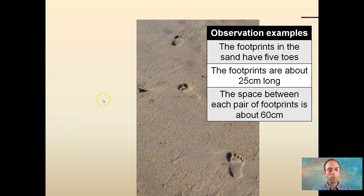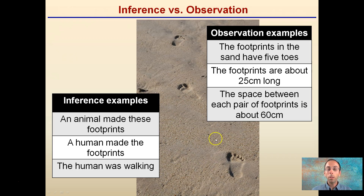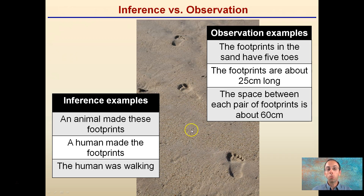Our definitions between observations and inference — we see some footprints here in the sand. An observation would be: the footprints in the sand have five toes, the footprints are about 25 centimeters long, and the space between each pair of footprints is about 60 centimeters. Those are three observations for this image. Three inferences would be: an animal made these footprints, a human made these footprints, and the human was walking. We're inferring the walking because we're not sure — it could be running — but based on the spacing, we infer this individual was walking.